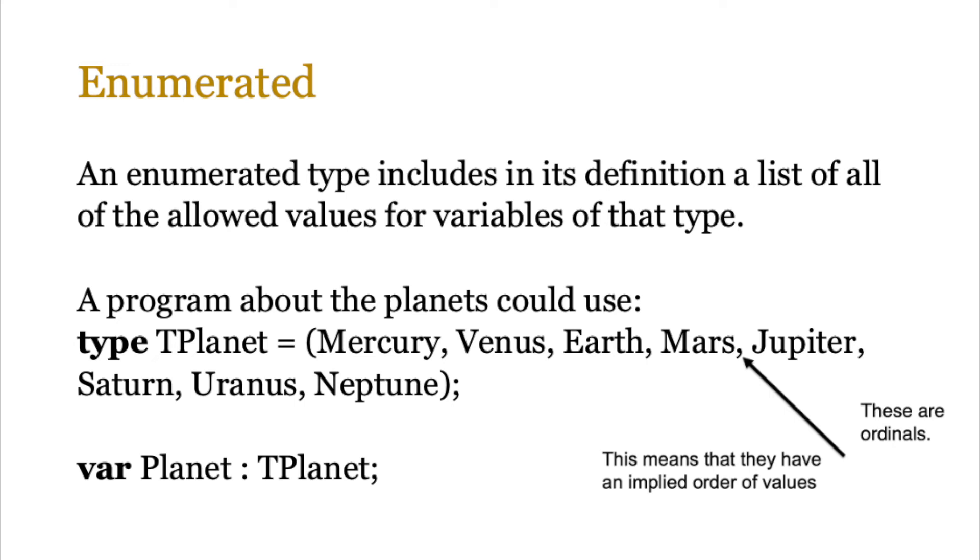Now why do we use enumerated data types? Well because they only allow the values that we, as the programmer or developer, define when we are making that particular data type. So the planet can only have the following values, Mercury, Venus, Earth, Mars, Jupiter, Saturn, Uranus, Neptune. It will not have any other value assigned to it.